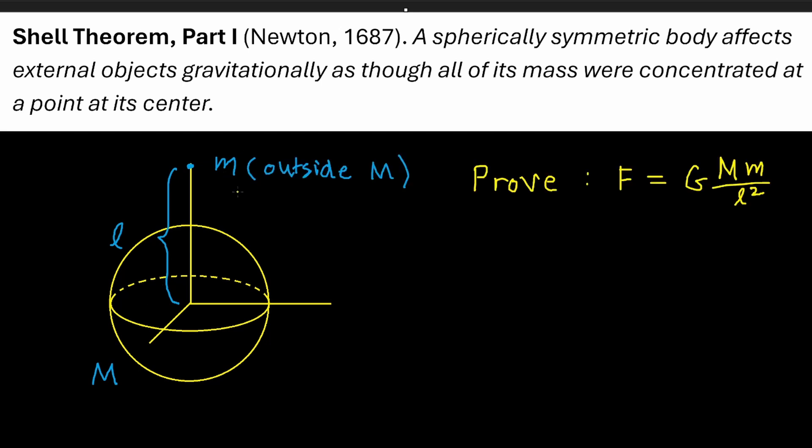We wish to prove the following result. That is, the gravitational force experienced by the point mass little m is given by G times big M times little m divided by L squared, with the attractive force pointing towards the center of the spherical body.